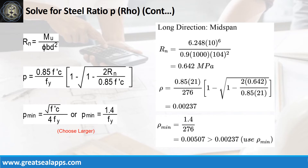Given long direction, mid-span moment equals 6.248 kN·m/m. Resistance factor equals 0.9. B equals 1,000 mm and D equals 104 mm. The beam design ratio Rn equals 0.642 MPa, and reinforcement ratio ρ equals 0.00237. Use ρ minimum of 0.00507.